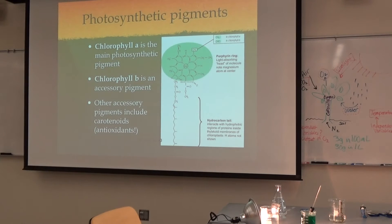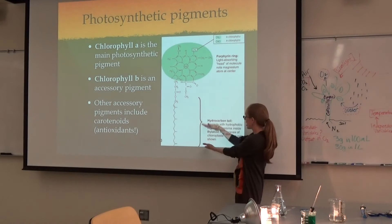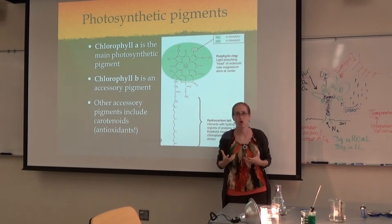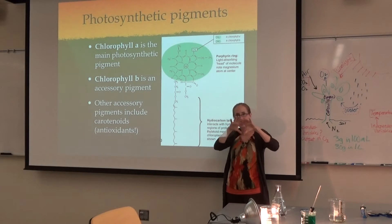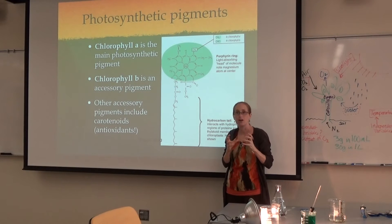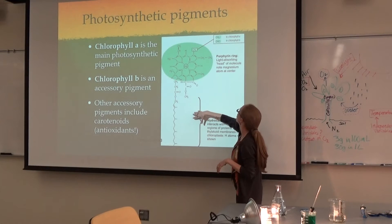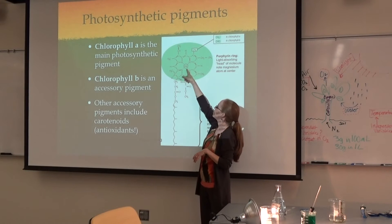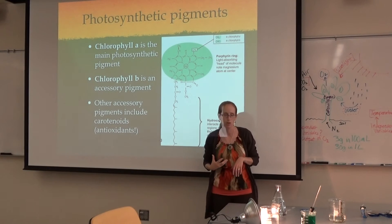I want you to show students chlorophyll's structure. They don't need to know it in detail, but this long hydrocarbon tail makes it hydrophobic — that's how it's stuck into the thylakoids of the chloroplast. You can also see some of the micronutrients plants need, like magnesium and nitrogen, to build chlorophyll.